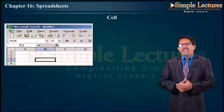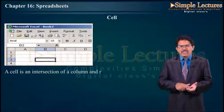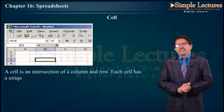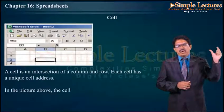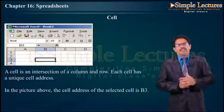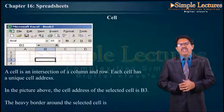Cell: A cell is the intersection of a column and a row. Each cell has a unique address. In the picture above, the cell address of the selected cell is B3. The heavy border around the selected cell is called the cell pointer.